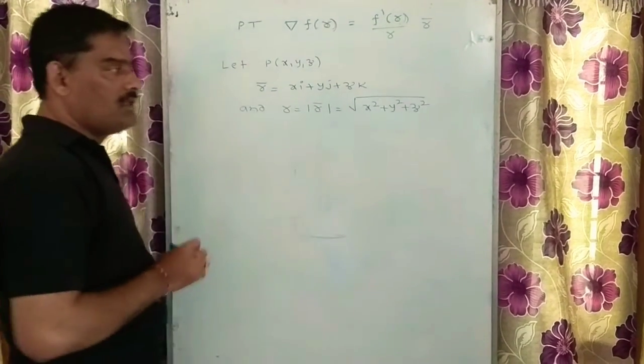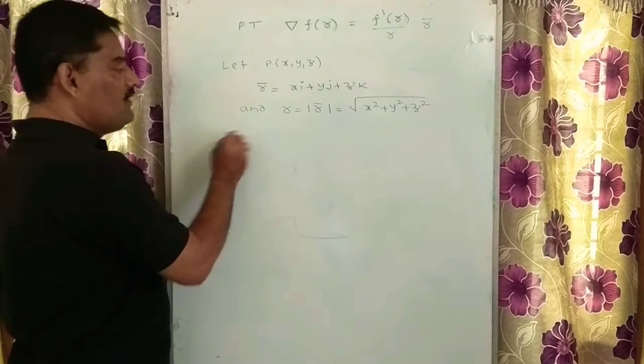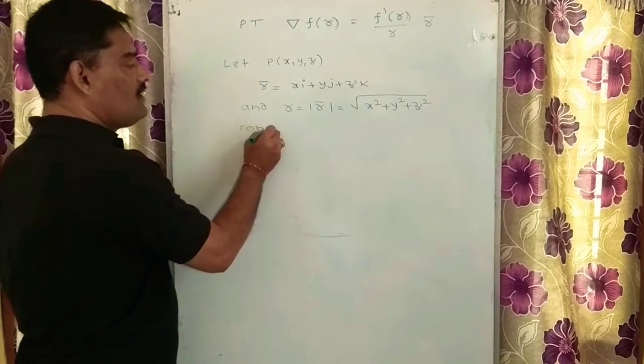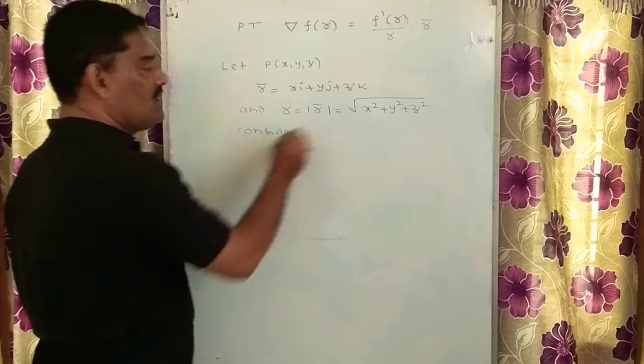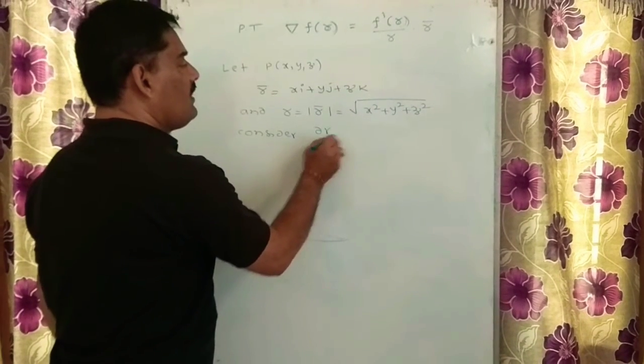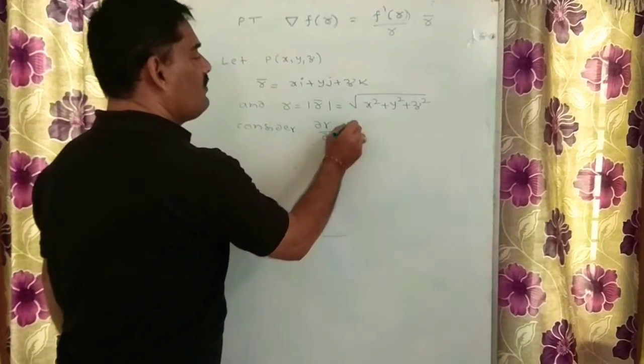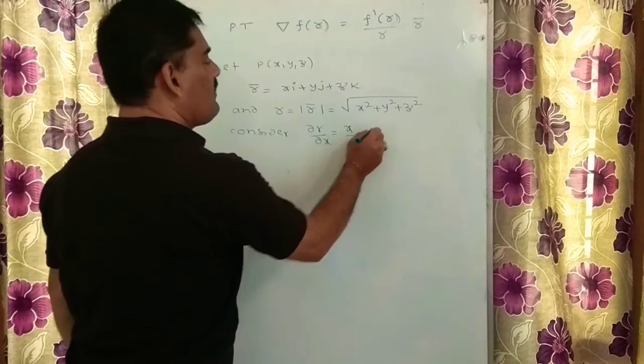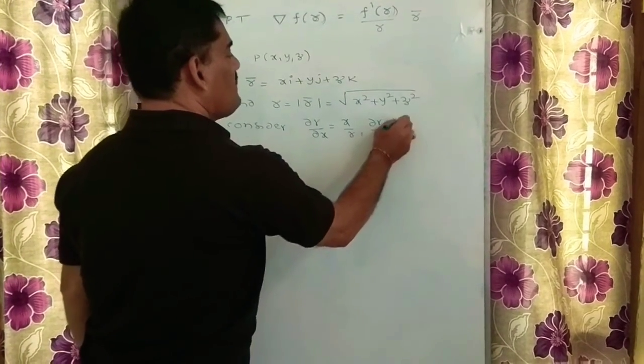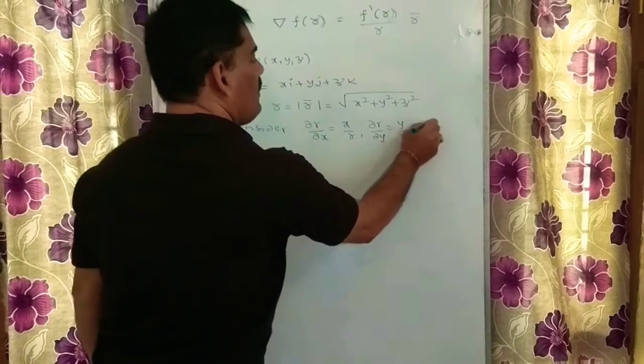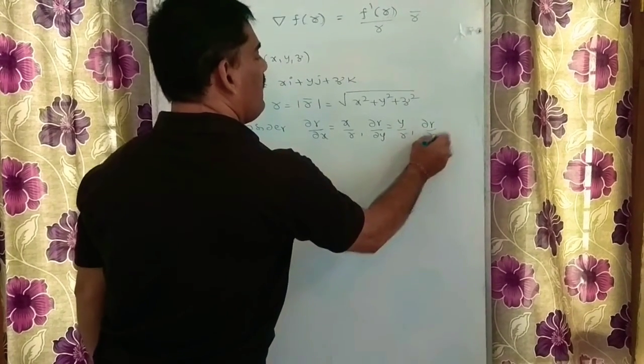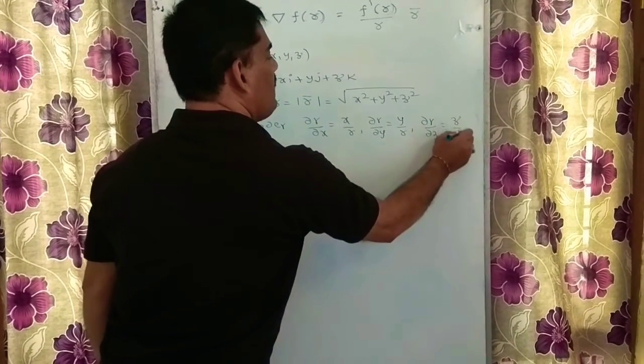Corresponding to this information, as we calculated in your last video session, dou r by dou x is x by r, dou r by dou y is y by r, and dou r by dou z is equal to z by r.